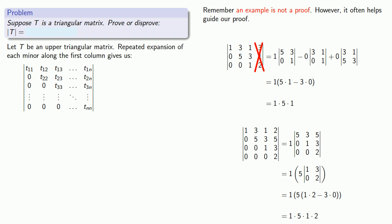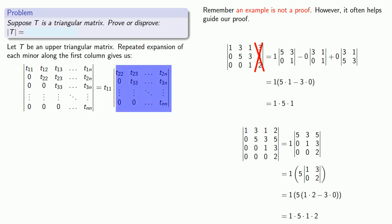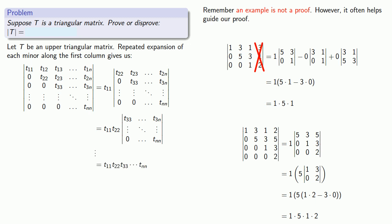That will give us T₁₁ times the minor, and all other components of this first step are going to be 0. When we expand this minor, because it's an upper triangular matrix, we take T₂₂ times the next minor — and again we have another upper triangular matrix. If we continue this process, we end up with the product of the terms along the main diagonal. This proves the result as long as T is an upper triangular matrix.